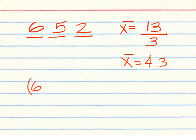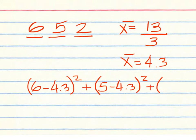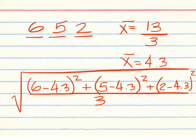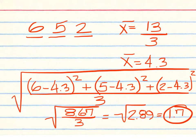So what we need to do is 6, the first item from the list, minus 4.3. Square the result. And then 5 minus 4.3. Square the result. And 2 minus 4.3. Square the result. We have 3 numbers in the list. So we're dividing by 3. And then at the end, we'll find the square root of everything. The top part comes down to be 8.67. Divide that by 3 to get 2.89. Square root of 2.89 is 1.7. That's the standard deviation.